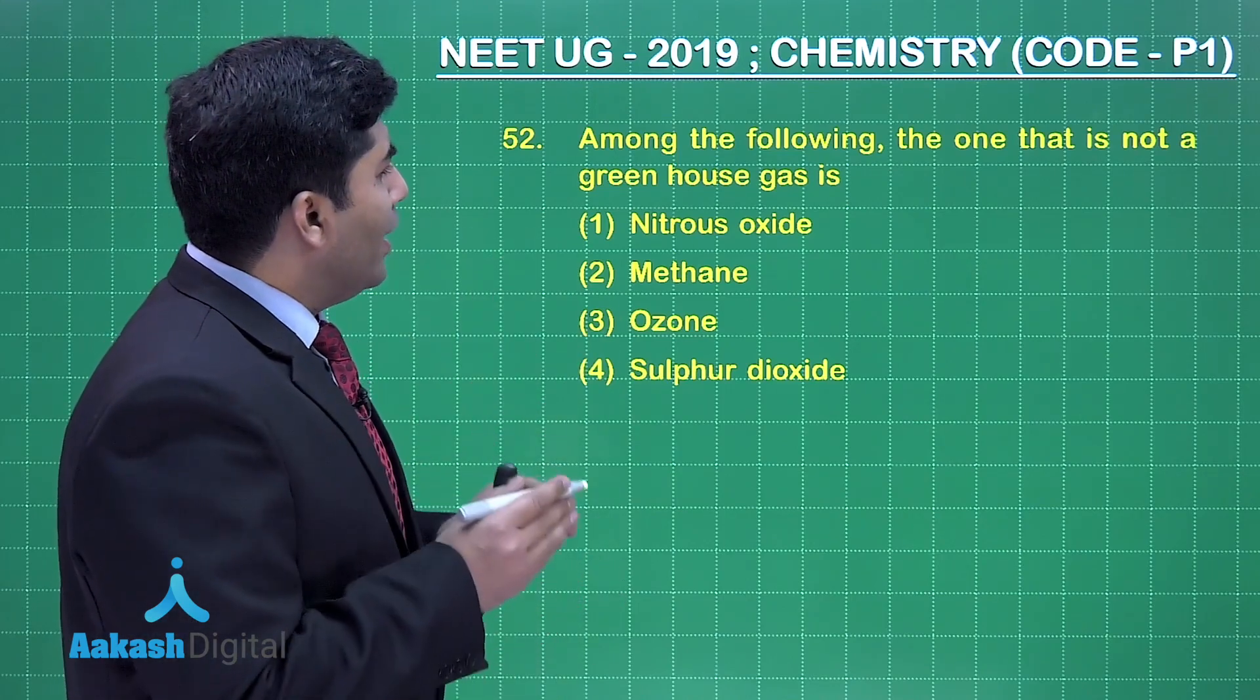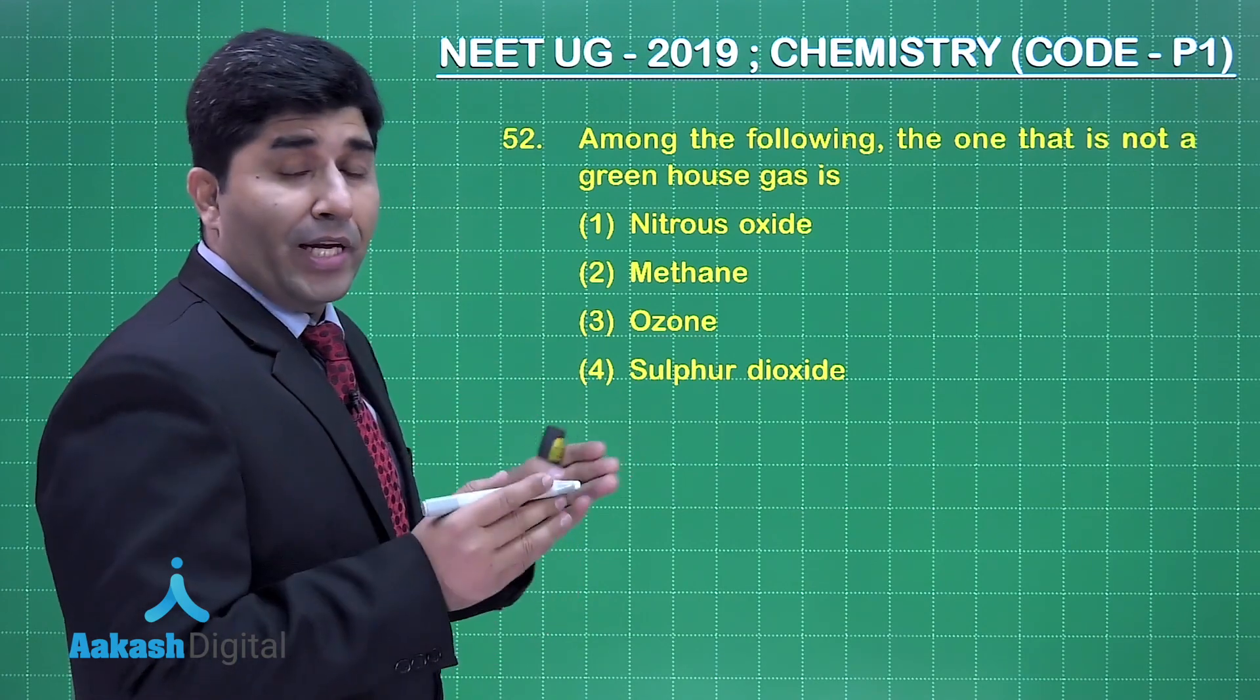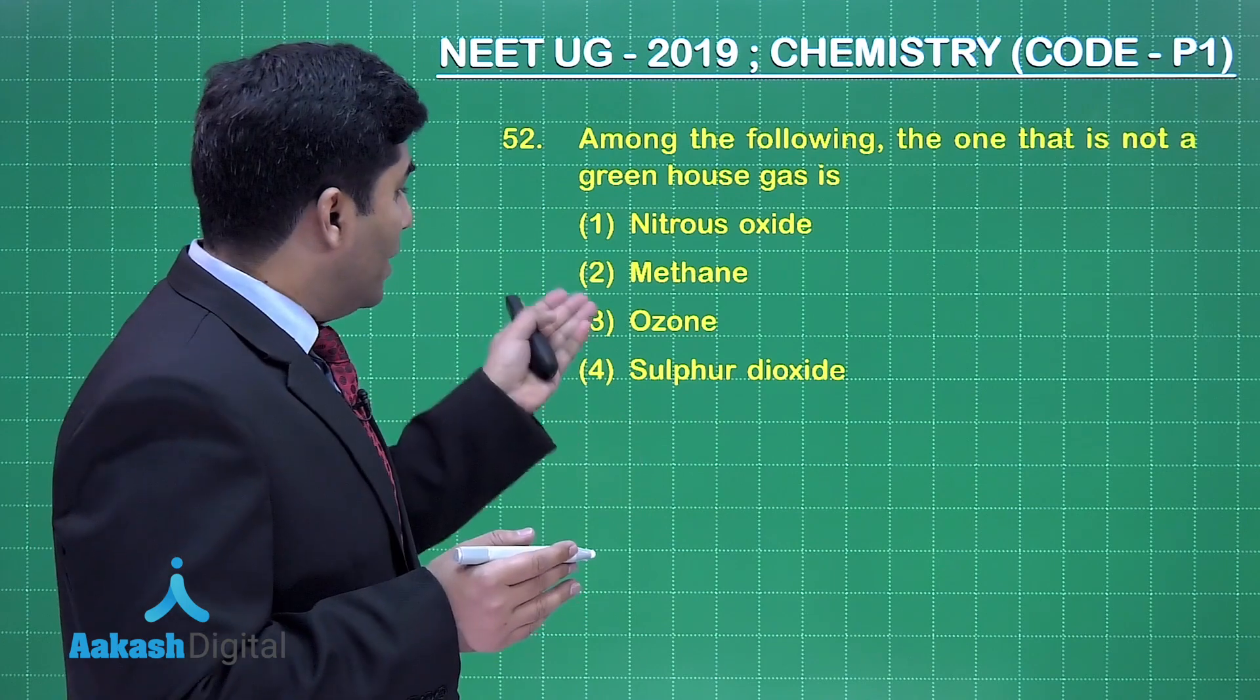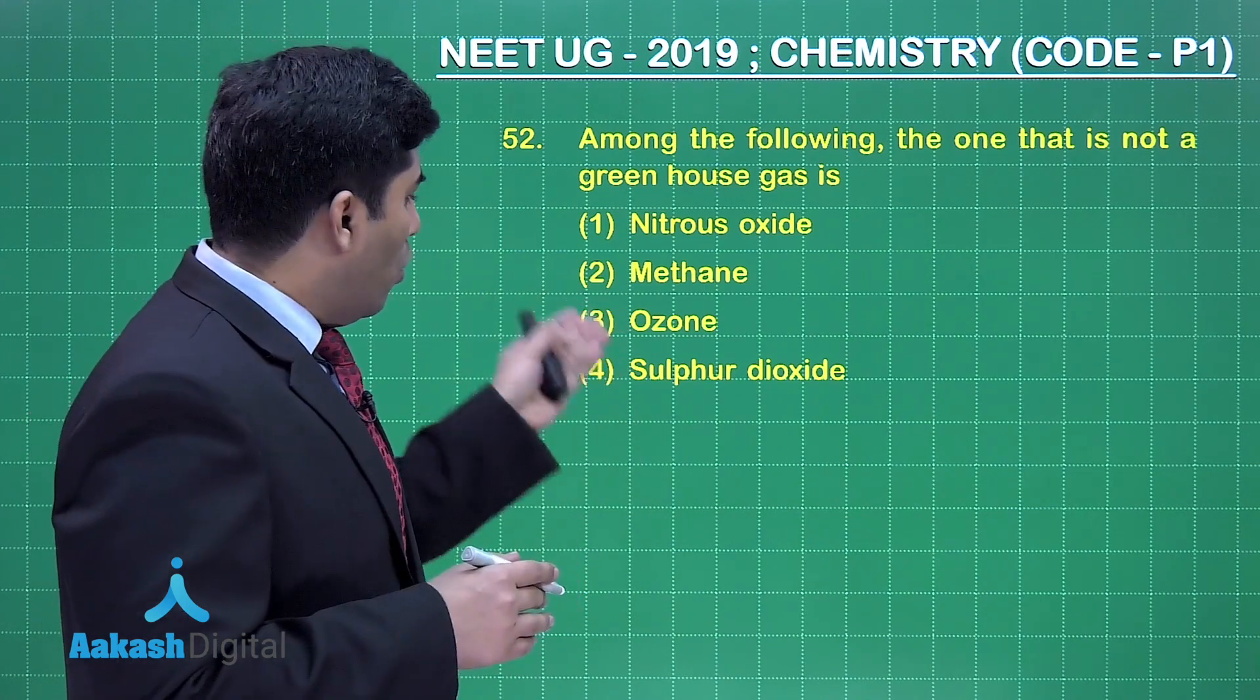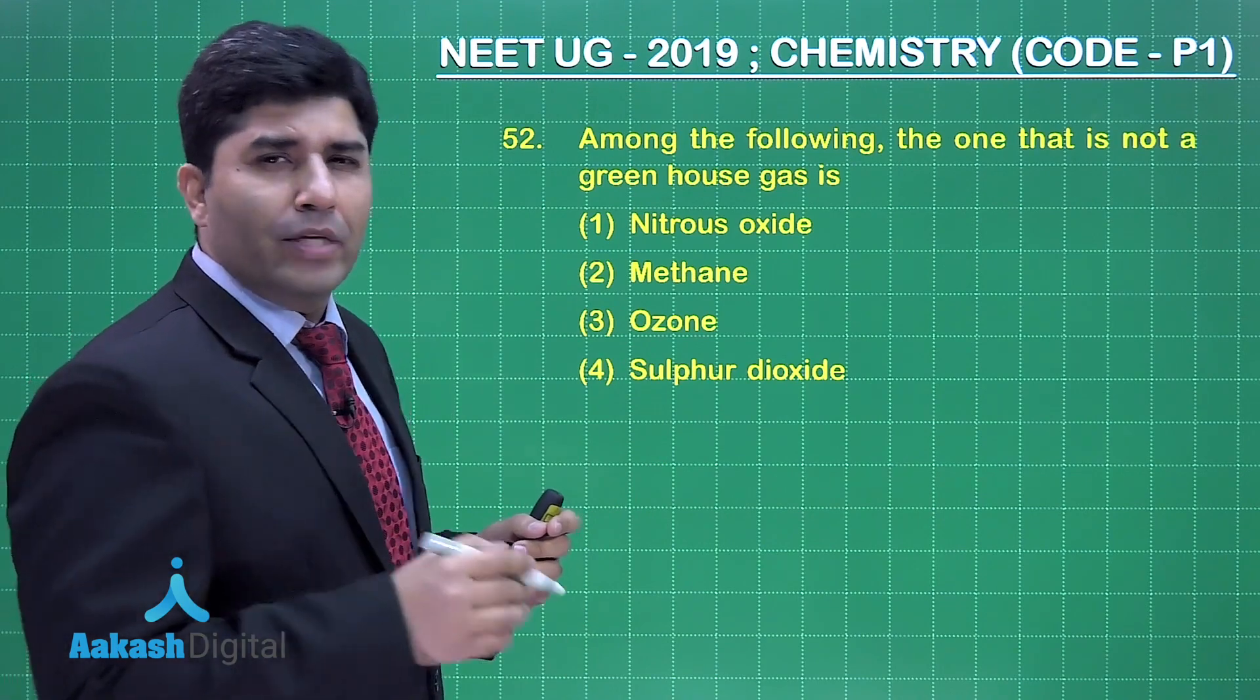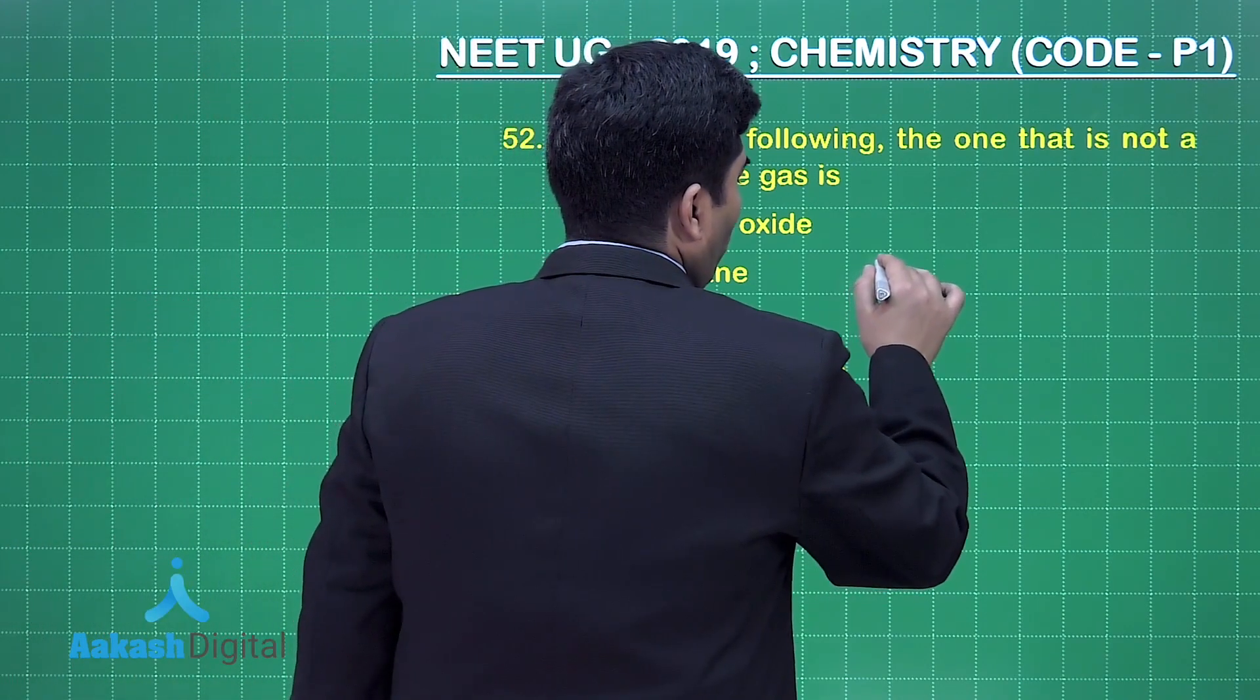In this question, among the following, the one that is not a greenhouse gas. The options are given to us. Nitrous oxide is a greenhouse gas. Methane is a greenhouse gas. Ozone is a greenhouse gas. Sulphur dioxide is not a greenhouse gas. That's why the answer will be option number 4.